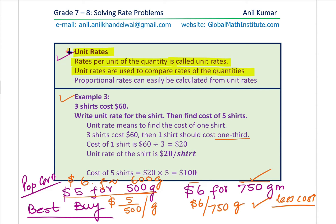We get $20 per shirt. That is the unit cost — cost of one shirt. Now we need to find the cost of 5 shirts: 5 times $20 equals $100. Do you see how easy it becomes to find the unit rate and then the rate for anything else?